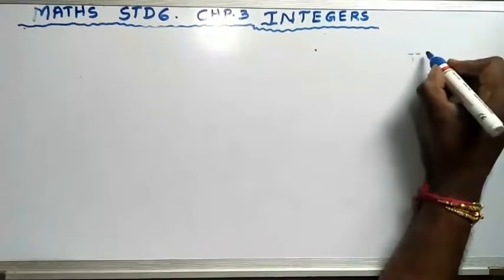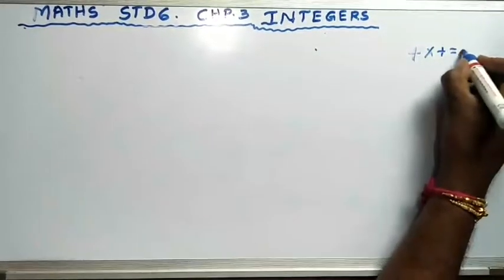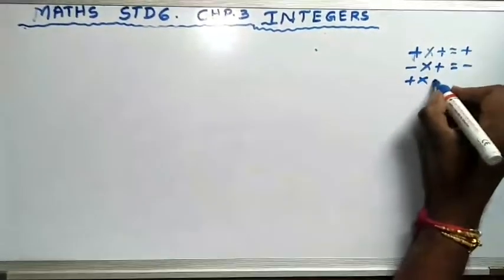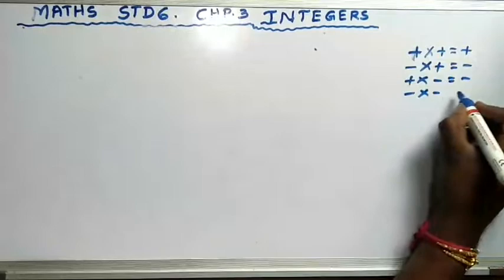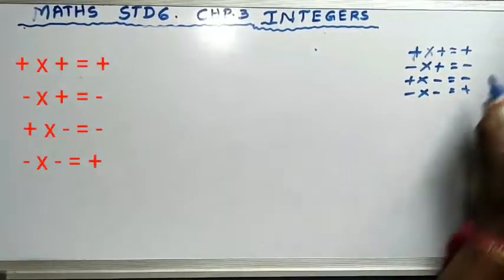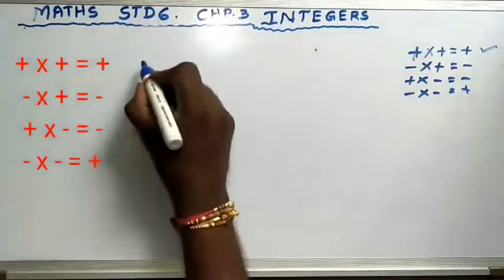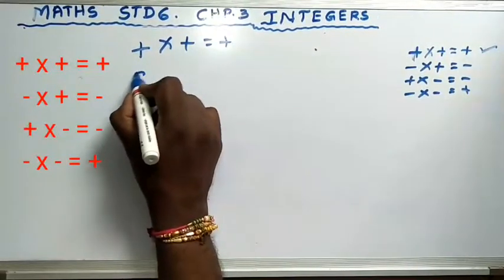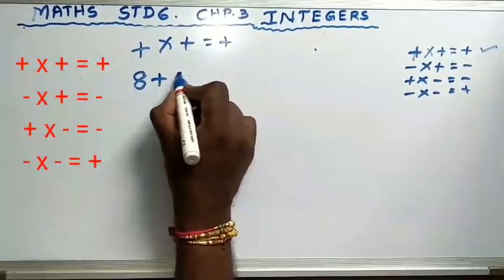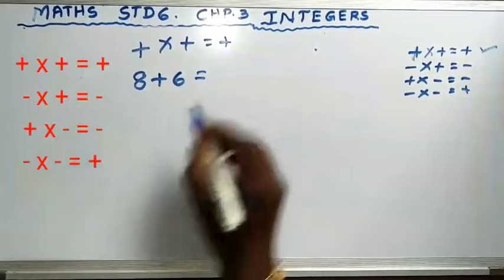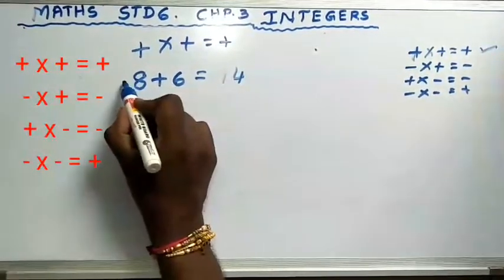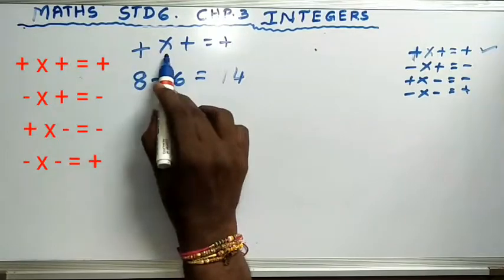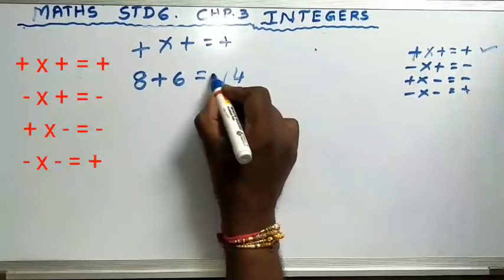To summarize the rules: plus into plus equals plus, minus into plus equals minus, plus into minus equals minus, minus into minus equals plus. Let us solve some sums. Plus into plus means — let's say plus 8 plus 6. Here 8 is positive and 6 is positive, so plus into plus gives a plus sign. So it is plus 14. Similarly, 31 plus 3 is 34 — positive plus positive is positive, you add them.